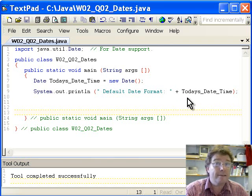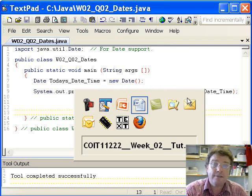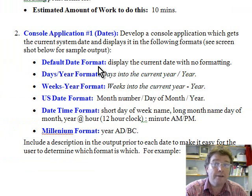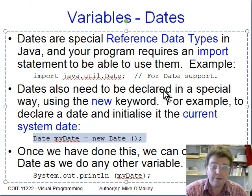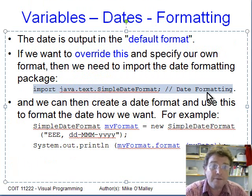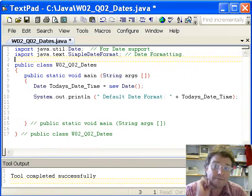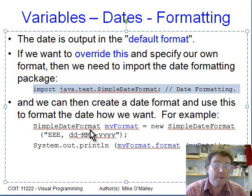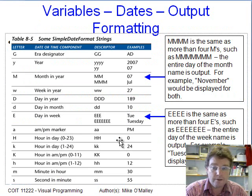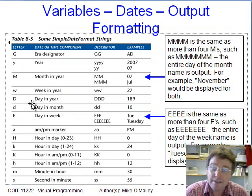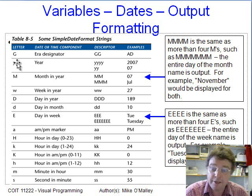Let's explore other formatting fields to answer the question. We've done the default date format. Now let's try the days into the current year. We need to import SimpleDateFormat — that's 'java.text.SimpleDateFormat' — placed at the top of the program with the other import. Once done, you can declare SimpleDateFormat fields. Looking at the formatting attributes: uppercase D gives you day in a year, so 'DDD' will give you something like 189 if we're 189 days into the current year. And 'yyyy' gives you the full four-digit year.